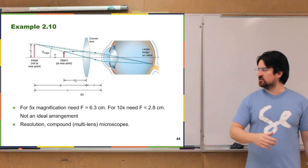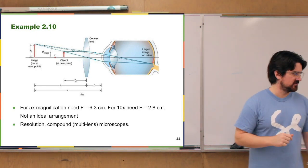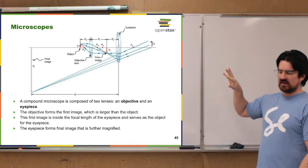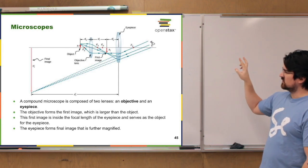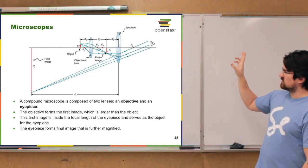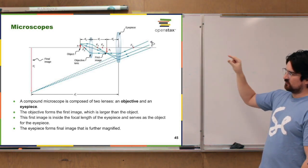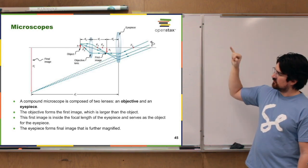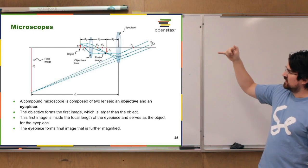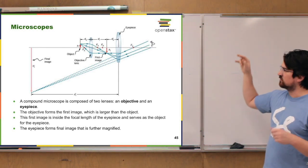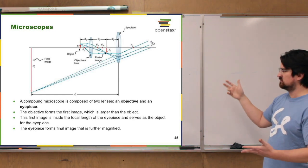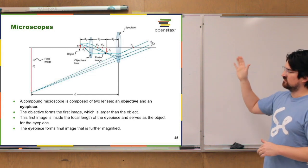To resolve that and get around it, you start using multiple lenses together, like microscopes. This is probably the simplest kind of microscope — two convex lenses. The front lens is called the objective lens, and the back lens, the one right by your eye, is called the eyepiece. The objective lens forms an image of the object that's magnified and enlarged in between the objective lens and the eyepiece, and then that image becomes essentially the object for the eyepiece.